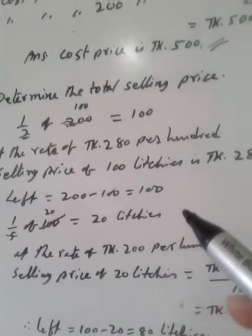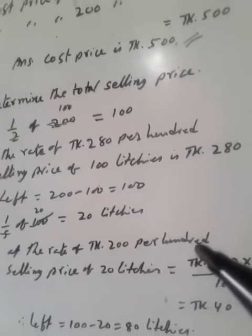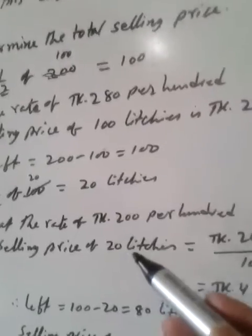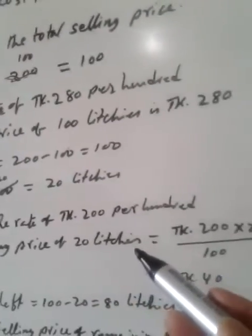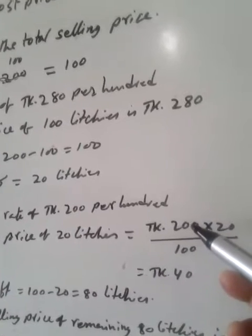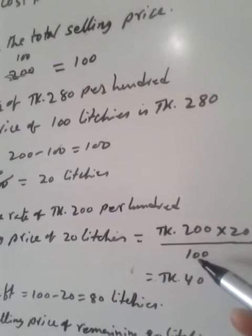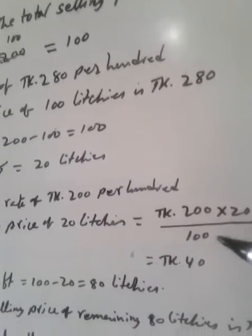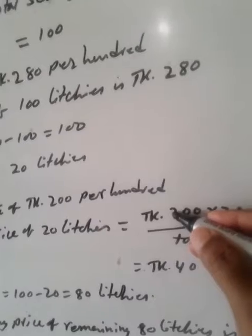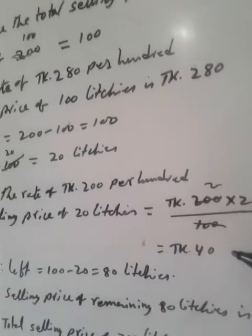These 20 litchis he sold at the rate of 200 per 100. At the rate of 200 per 100, divide by 100, and quantity of litchis 20. Then we are getting 100 divided by 20. At the rate of 200, he sold 40 Taka.